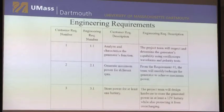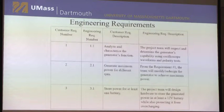Here's a more detailed overview of our engineering requirements to complete those steps. First, we have to inspect and determine the generator's capability using an oscilloscope, waveforms, and validity tests. Second, the team modified and redesigned the generator to achieve maximum power by changing coil and magnet orientation. And third, we designed hardware to store the generator power — that means a 12-volt battery — and also created a circuit to handle overcharging.